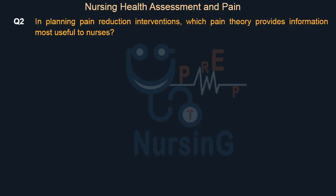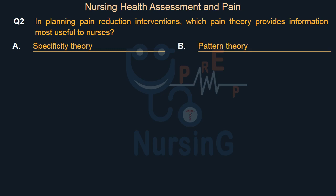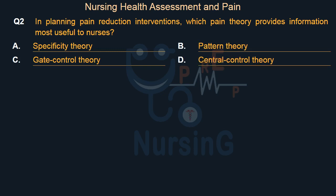In planning pain reduction interventions, which pain theory provides information most useful to nurses? Option A: Specificity theory. Option B: Pattern theory. Option C: Gate control theory. Option D: Central control theory.